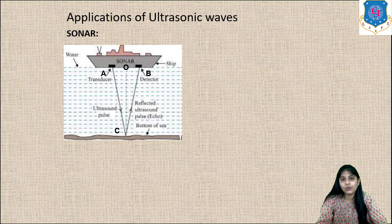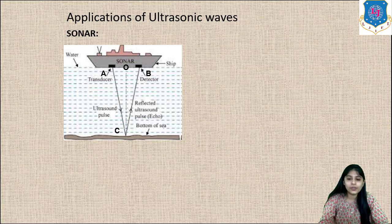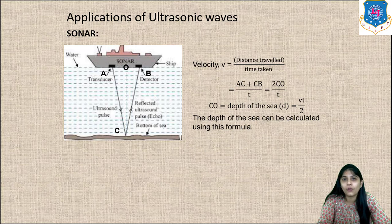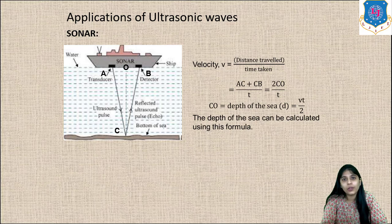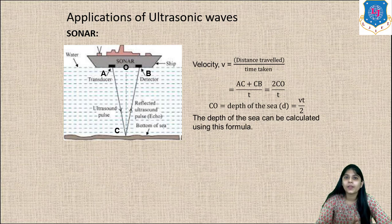Sonar uses ultrasonic waves to determine the distance between two objects. It is based on the principle of echo sounding, which means the reflected sound wave. There are two transducers: transducer A, which is the transmitter, and transducer B, which is the detector or receiver.